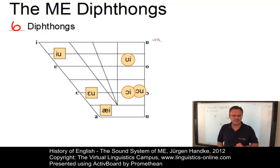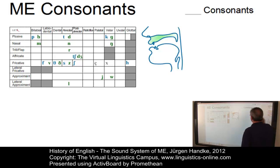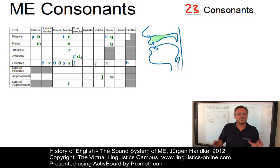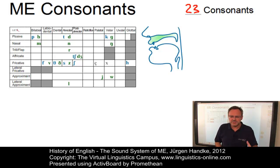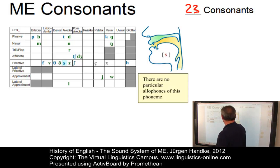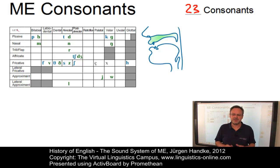So much for the vowels — monophthongs and diphthongs. Now here are the consonants. There were 23 consonantal phonemes. Middle English retained all Old English consonants. The only system-wide change between the consonants of Old English and Middle English was the already mentioned addition of phonemic voiced fricatives. For example, /s/ as in 'son' and /z/ as in 'reason' were no longer allophones of the same phoneme but became independent phonemes.